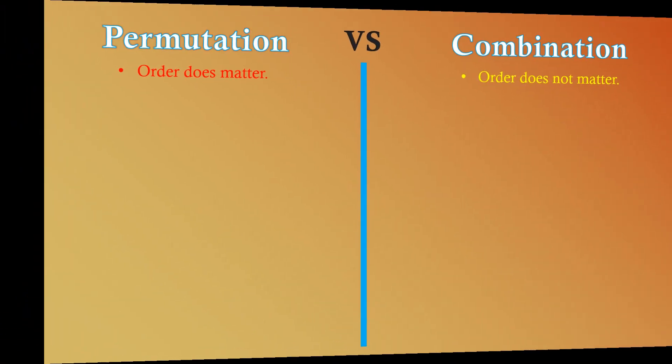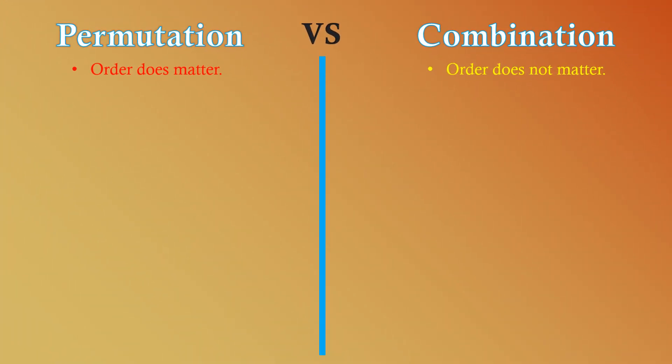We talked previously about permutation, so now we will learn the difference between permutation and combination. In permutation, order does matter, while in combination, order does not matter. For example, with the numbers 7 and 9, if we arrange them, we can have 79 or 97. These are considered two different sets since 79 is different from 97, even if they both contain 7 and 9.